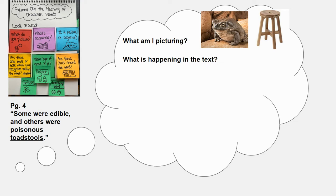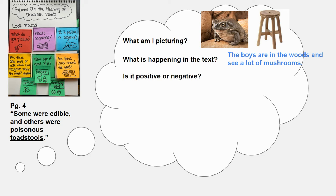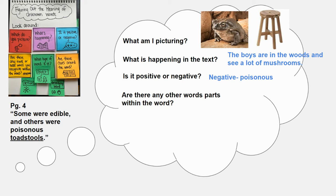What is happening in the text? In this particular part, he's describing all of these magical things that he finds in the woods, and he talks about how he finds all different kinds of mushrooms. So this word toadstools falls in that section where he's describing mushrooms — that could be important. Is it a positive word or a negative word? Well, in the sentence itself, it actually calls them poisonous, so it's more of a negative word. Are there any word parts within the word? There are two base words put together — toad and stool — but I think the meaning of the word is different from each of those individual meanings separately.